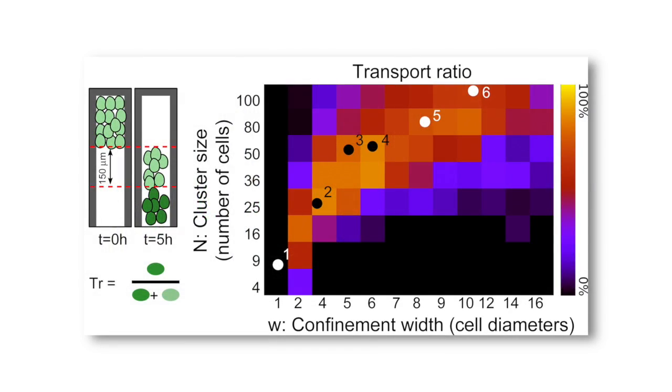So for example, if we have a stream of 50 cells, and you start to increase the width, you see an increase in the efficiency of migration, and the cells migrate faster and more efficiently. But if you increase the width too much, then the efficiency of migration is reduced. So basically, this says that there is an optimal number of cells for a given width of confinement.